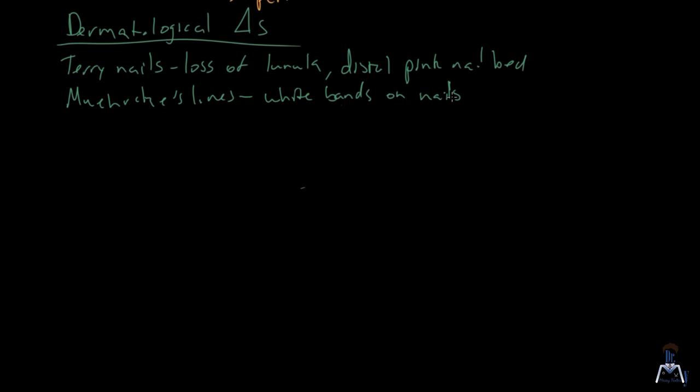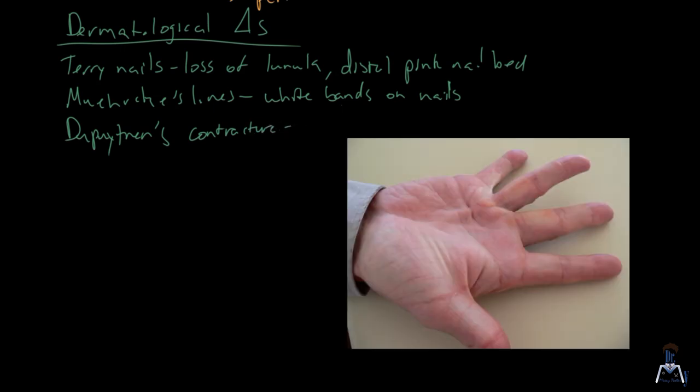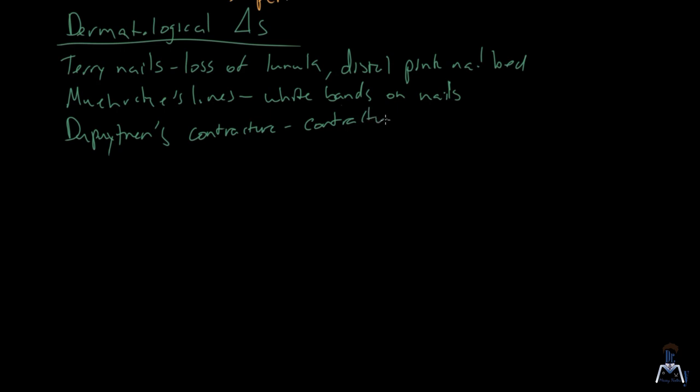The next thing I want you to know is Dupuytren's contracture. This is more pronounced in alcoholics. It starts off as a nodule and it slowly progresses into this contracture of the finger or fingers due to proliferation of the palmar fascia.